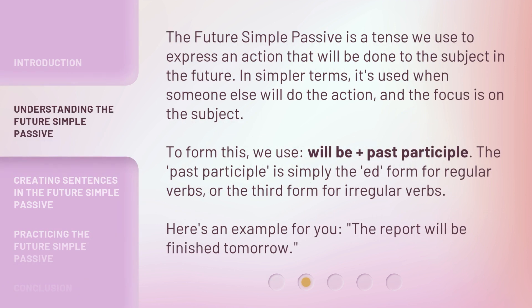The Future Simple Passive is a tense we use to express an action that will be done to the subject in the future. In simpler terms, it's used when someone else will do the action, and the focus is on the subject. To form this, we use: will be plus past participle. The past participle is simply the "-ed" form for regular verbs, or the third form for irregular verbs. Here's an example: The report will be finished tomorrow.